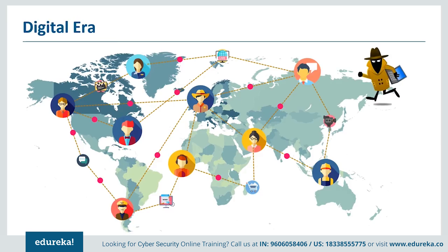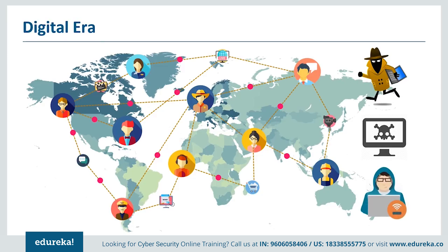Cyber criminals are in the business of stealing sensitive data like contact numbers, credit card information, and bank account details that they sell to third parties for profit. Then there are malicious hackers with personal enmity hacking into systems to expose the host's vulnerabilities. Hacktivists, inspired by their political and social activism, hack systems opposed to their ideology and mindset. Making use of these vulnerabilities present in the internet's architecture, people are trying to initiate attacks in cyber space. We call them cyber attacks.